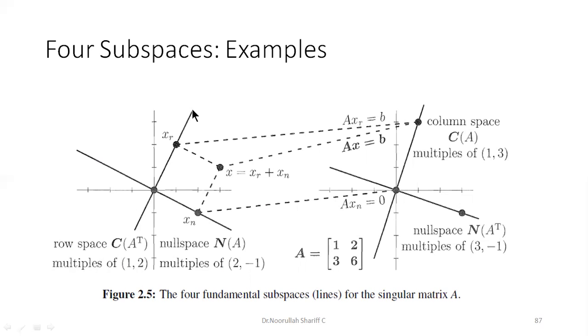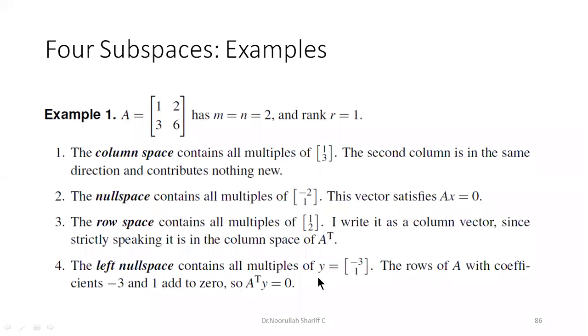Okay, every time this line, this line is for C(A^T), this line is for N(A), this line is for C(A), similarly, this line is for N(A^T), and this is 3 comma minus 1 or minus 3 comma 1, hardly matters. This is minus 3 comma 1.